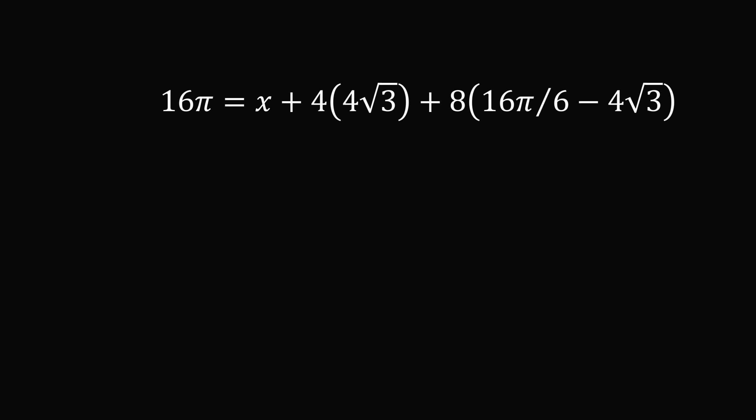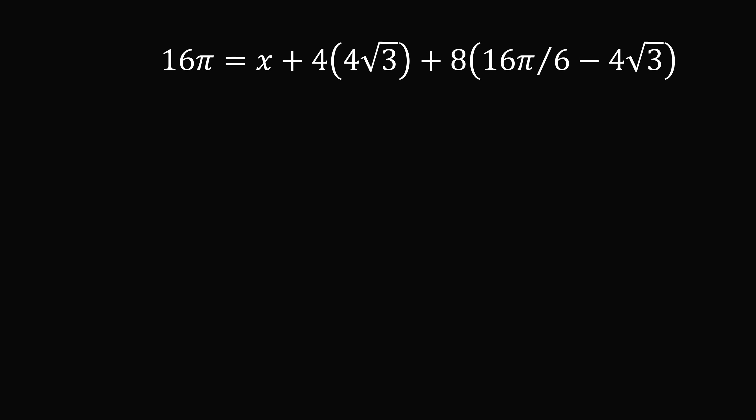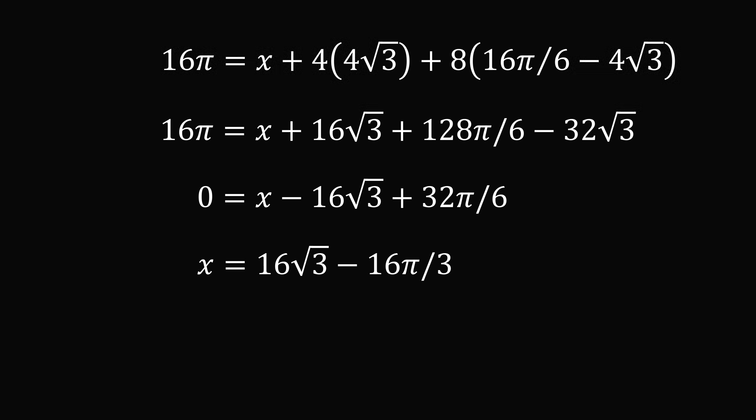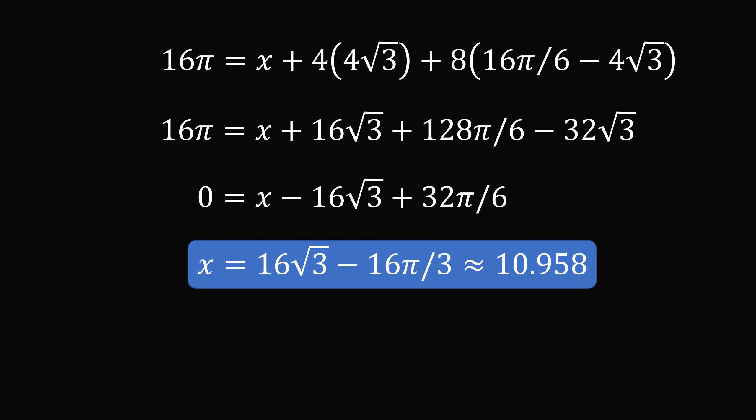All that remains is to simplify this equation and solve for x. So we'll just simplify this equation and we'll group terms that have a square root of 3 and we'll group terms that have a pi together. So we get 0 is equal to x minus 16 times the square root of 3 plus 32 pi over 6. We then solve for x to get that x is equal to 16 times the square root of 3 minus 16 pi over 3, and that's approximately equal to 10.958. And that's the answer.